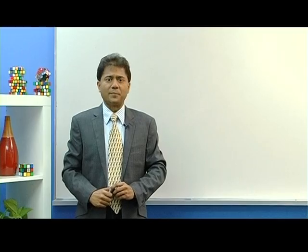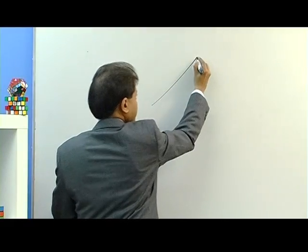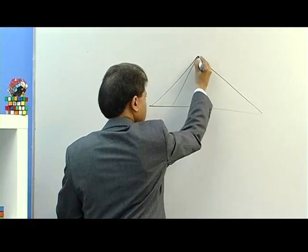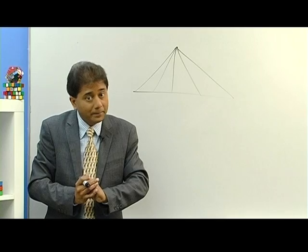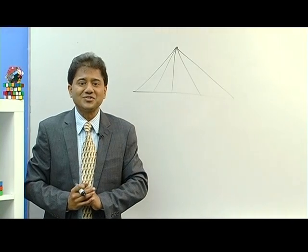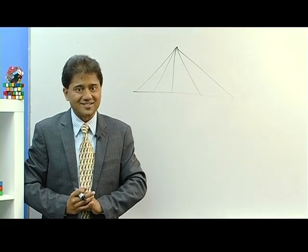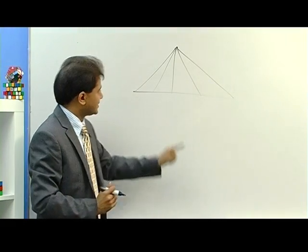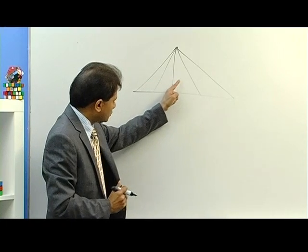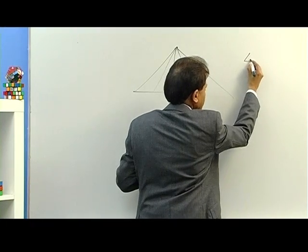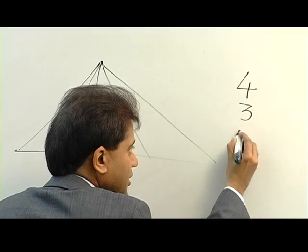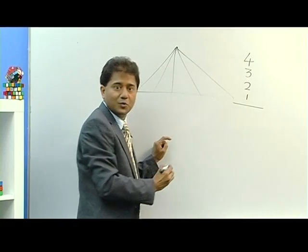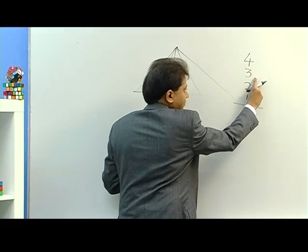Good evening and welcome to Matt's T Pachala. Let's start with the first puzzle: how many triangles are in the figure? I'm going to show you a faster way to calculate the number of triangles. All you have to do is count the base triangles — one, two, three, four — write four, and then write the numbers in descending order: three, two, and one. Now just add them up: four plus three is seven, plus two is nine.